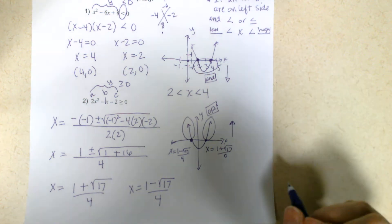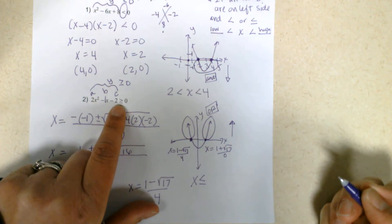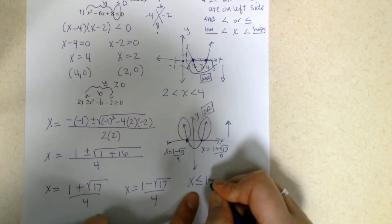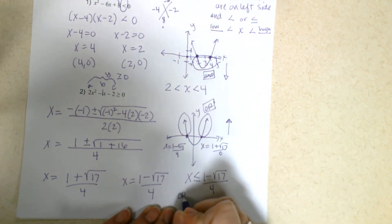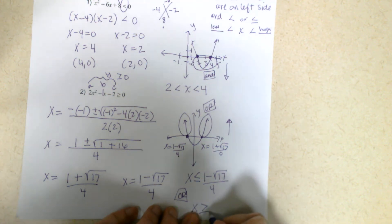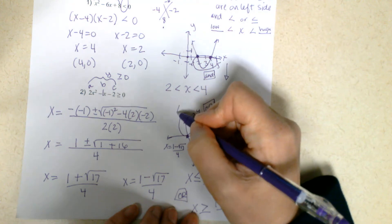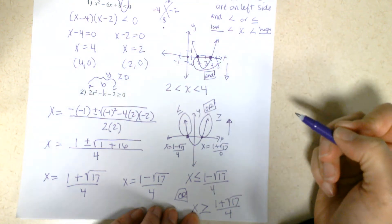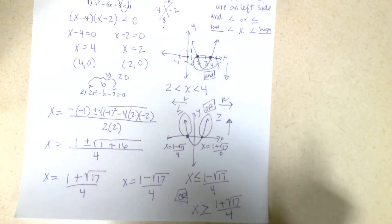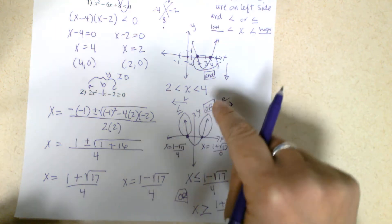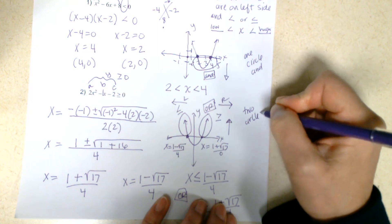So how do we write that out? First, you take your lower value — the one on the left — and write: x is less than or equal to 1 minus the square root of 17 over 4. Then we write the word 'or': x is greater than or equal to 1 plus the square root of 17 over 4. So the less-than-one side is the lower one on the left, and the greater-than-one is on the right. Two circles means it's an or problem; one circle means it's an and problem.